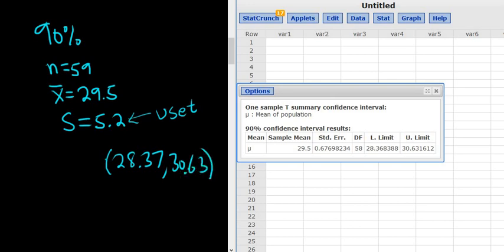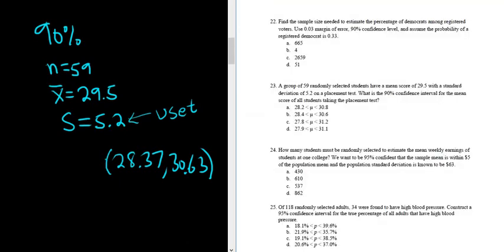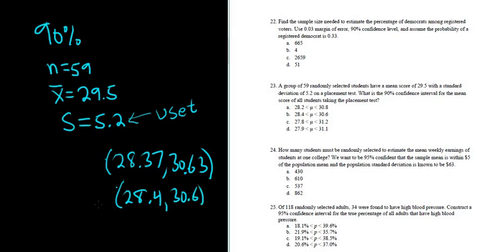And let's see if that's correct. So they're using one decimal. So one decimal for us would be 28.4, 30.6. And that would be choice B in this case. The answer to the problem is B. That's it.